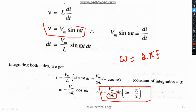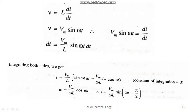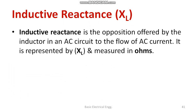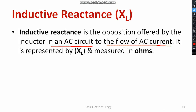L is known as inductance. So what is ωL? ωL is generally called inductive reactance. Inductive reactance is the opposition offered by the inductor in an AC circuit to the flow of AC current. It is represented by the letter XL and is measured in ohms.